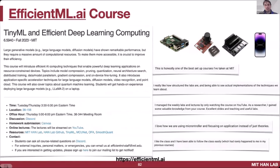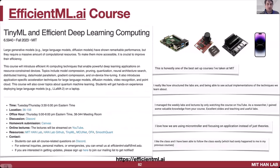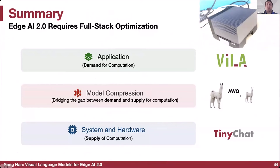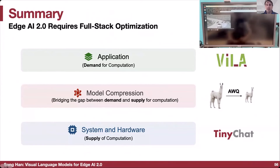Thank you very much for this excellent presentation — the perfect way to kick off our forum on launching AI at the edge. A question from the audience: given the relative speed with which Transformers and LLMs have become prominent in deep learning and AI, is it likely they will be disrupted by a similar technical breakthrough? What do you think about the permanence of this type of model being used today in vision and other applications?